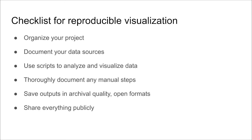This checklist covers the major steps for creating a reproducible visualization: organize your project, document your data sources, use scripts to analyze and visualize data, thoroughly document any manual steps, save outputs in archival quality open formats, and share everything publicly.